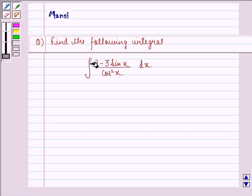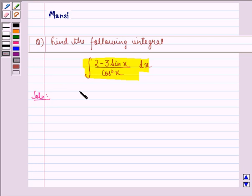that is integral of 2 minus 3 sin x divided by cos square x dx. So let us start with the solution to this question. We have to find the integral of 2 minus 3 sin x divided by cos square x dx.